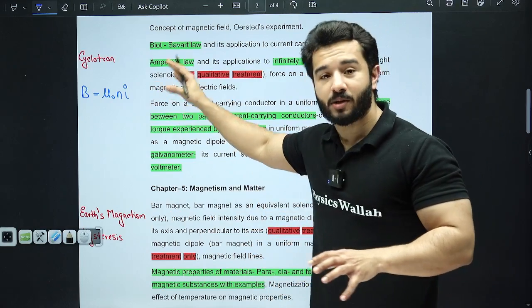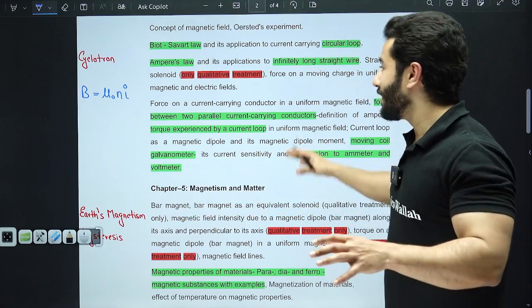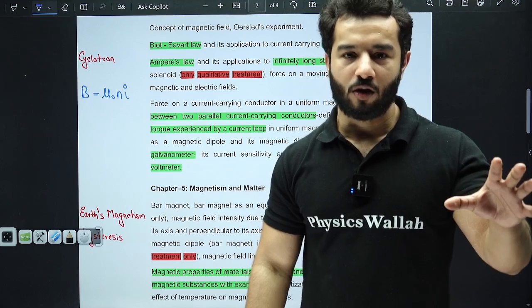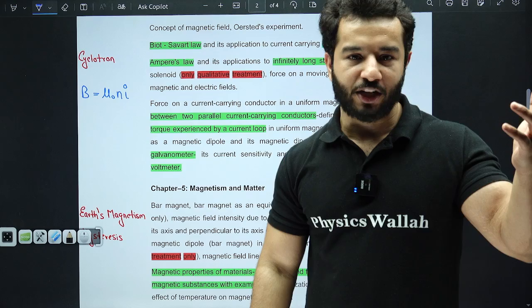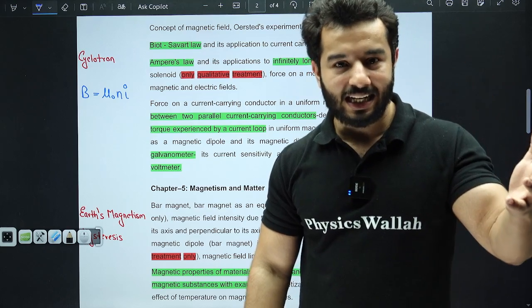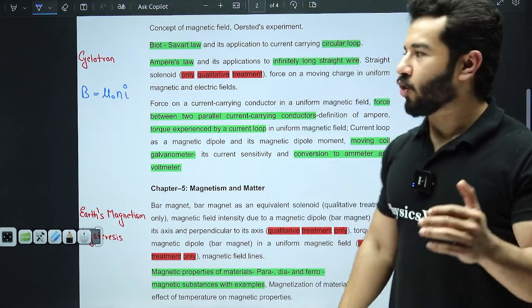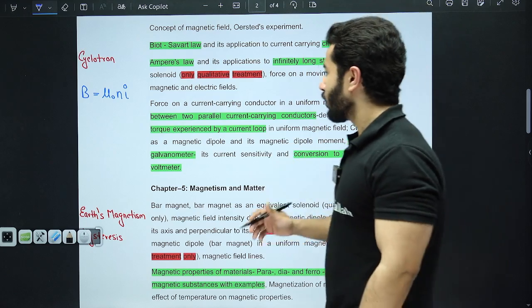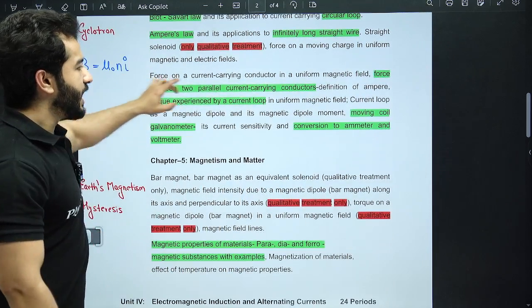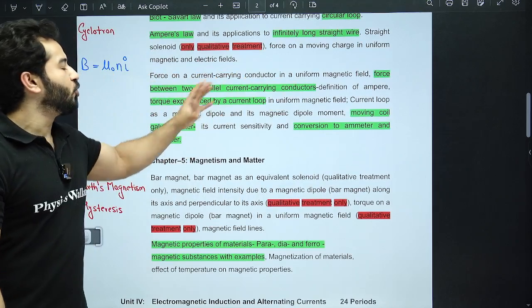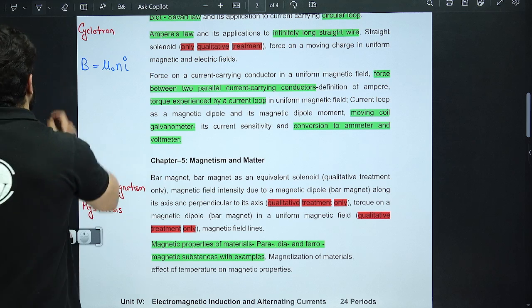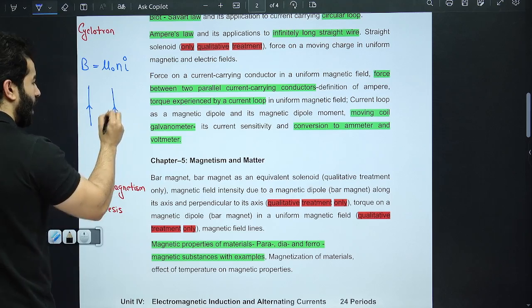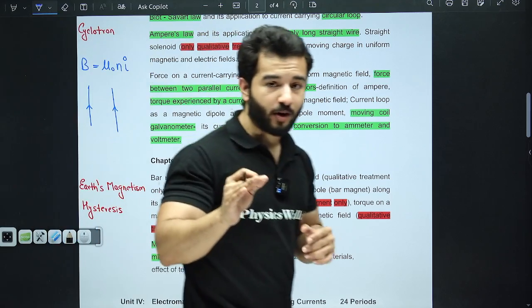You just need to remember this formula. Derivation is omitted. We used to derive it using Ampere's law, but we never used integration for this. Even the Ampere's law derivation is not going to be asked. Moving on, the next important thing is force between two parallel current carrying conductors. This is very important because from this you need to remember the formula, how you got to that formula is also important, and one ampere definition is related with it.